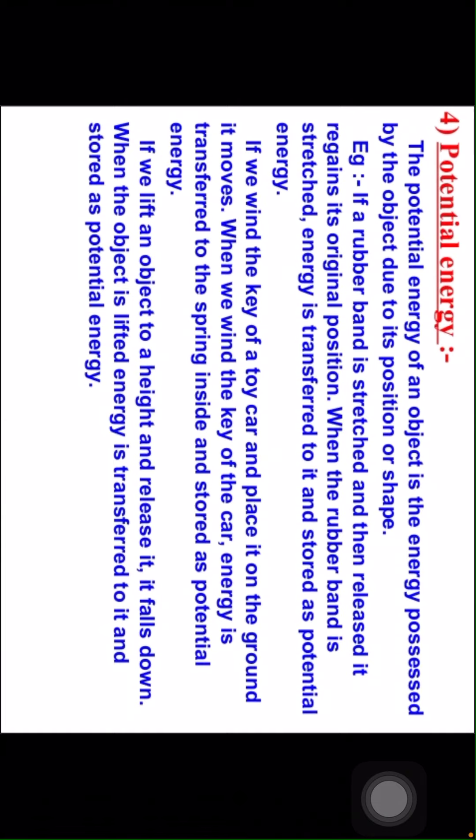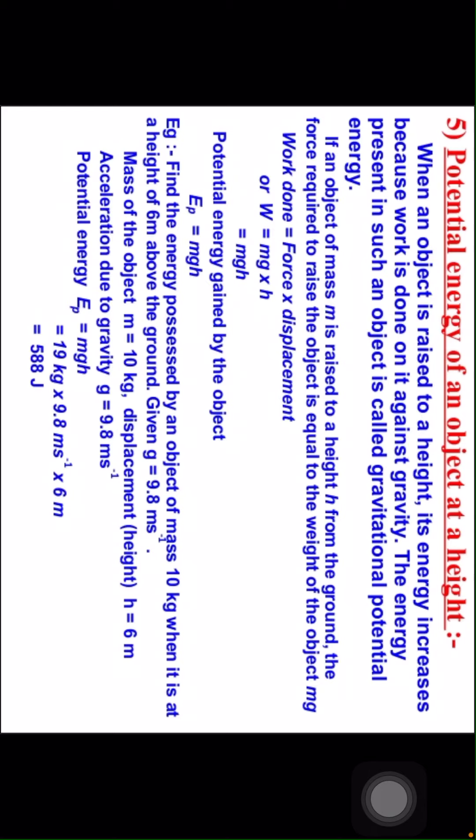Next topic: potential energy. The potential energy of an object is the energy possessed by the object due to its position or shape. For example, if a rubber band is stretched and then released, it regains its original position. When the rubber band is stretched, energy is transferred to it and stored as potential energy. If we wind the key of a toy car and place it on the ground, it moves. When we wind the key of the car, energy is transferred to the spring inside and stored as potential energy. If we lift an object to a height and release it, it falls down. When the object is lifted, energy is transferred to it and stored as potential energy.